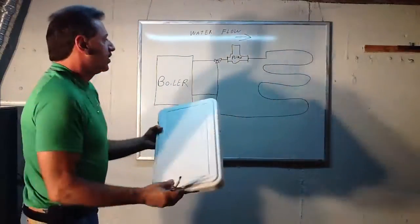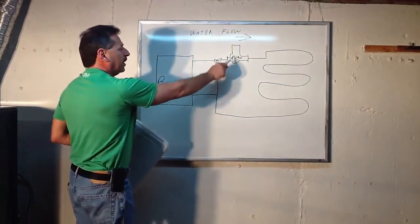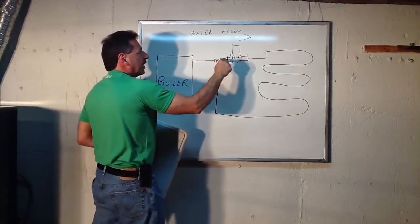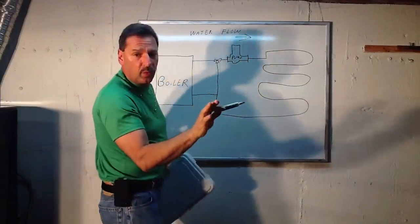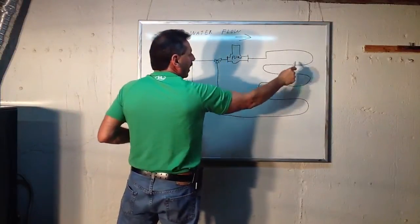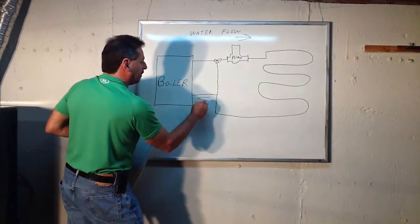So what takes place is the thermostat calls for heat and it turns on the circulator pump. As soon as the circulator pump goes on, it pulls hot water out of the boiler. Remember the water is 180 degrees. And it sends the water around the floor and then back into the boiler again. This is the return going back.